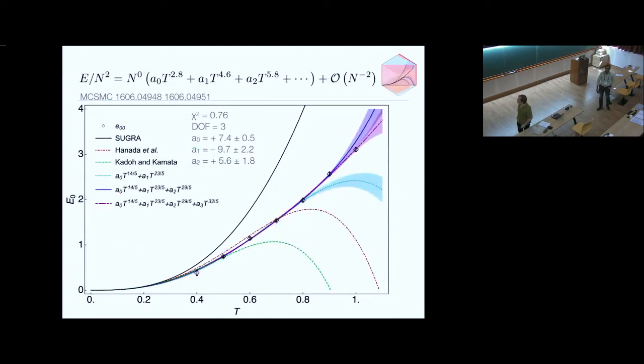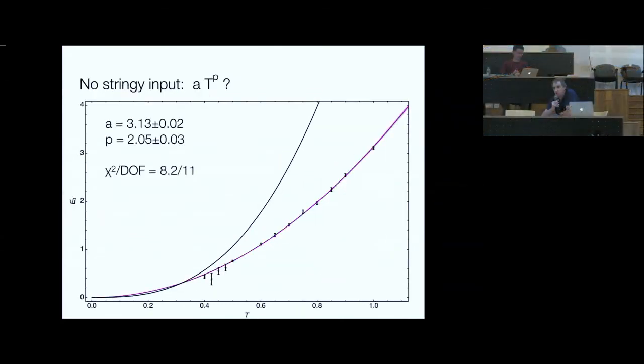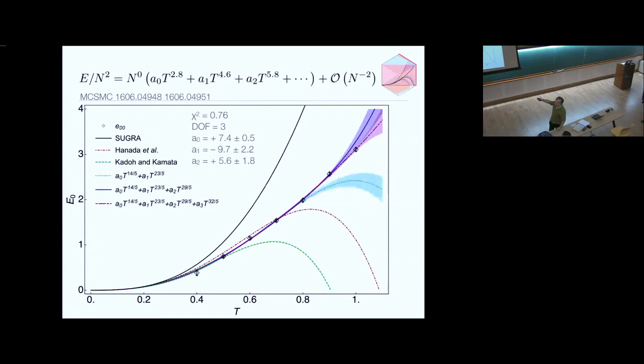Could you say something about where these different powers of t are coming from? And what are these alpha prime corrections that are used in all of these fits? Where do those numbers come from? I don't know the derivation in my head, but I know that what comes out is that the corrections go like t to the powers of 3/5. The first two are known to be zero, and then the fourth one is known to be zero.